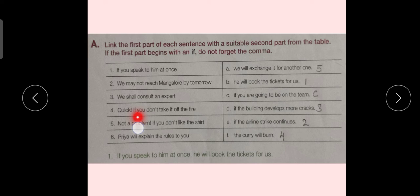Sentence number 4. Quick if you don't take it off the fire. We will match this part with option F. The curry will burn. Here, as you can see, that the sentence was beginning with if. So, what we will do? We will add a comma before writing the second part of this sentence.